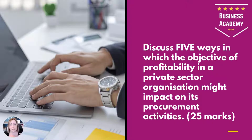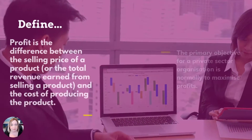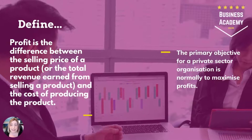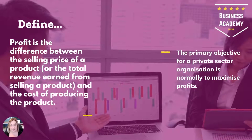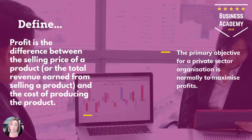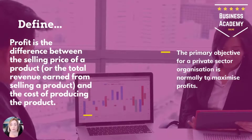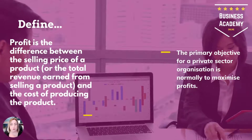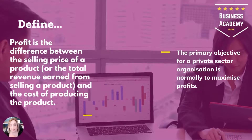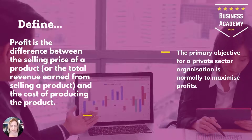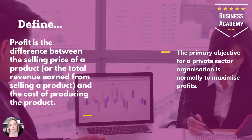And so we're going to drill into this question bit by bit now. It's always a good idea to define, and it's probably important to define profitability or profit. Profit is the difference between the selling price of a product — or the total revenue earned from selling a product — and the cost of producing that. So it's a nice little definition for you on profit.